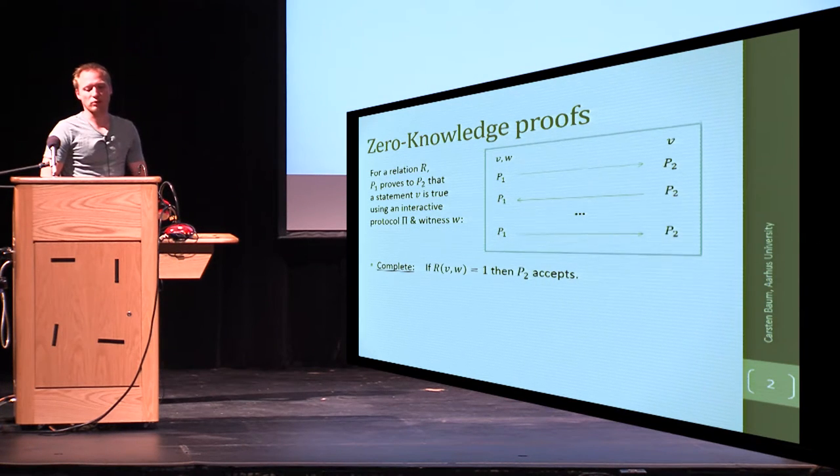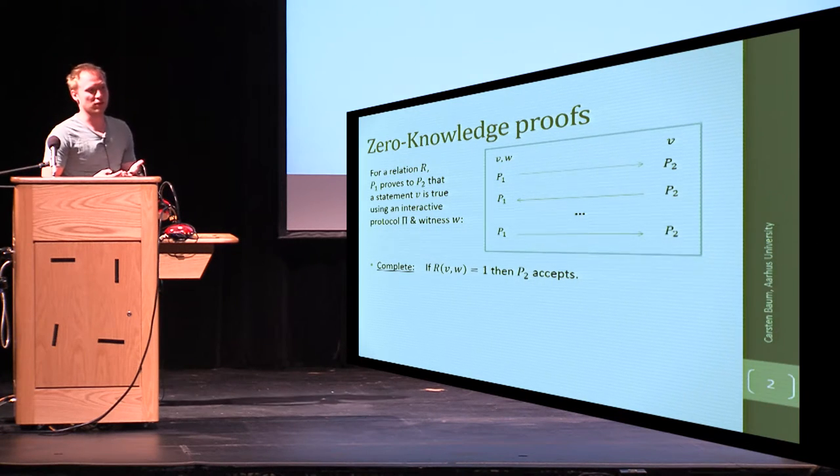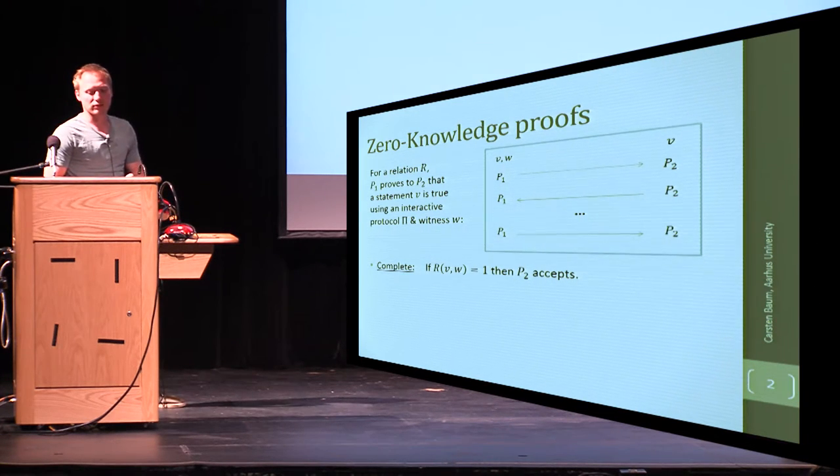First of all, we want that whenever the prover actually has a correct witness for the relation, the verifier will accept.